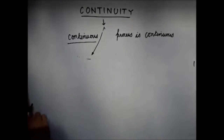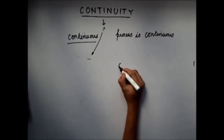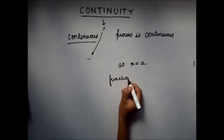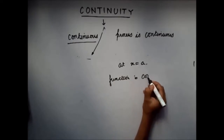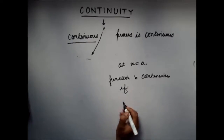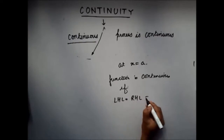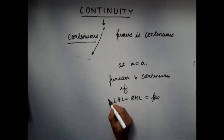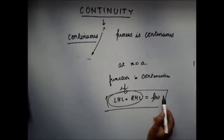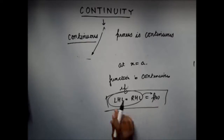We just saw that the condition for continuity of a function at a particular point x equals to a is: the left hand limit is equal to the right hand limit, which is equal to the function value at a. Now we go a step ahead and also check the functional value at a to prove that the function is continuous at a particular point x equals to a.